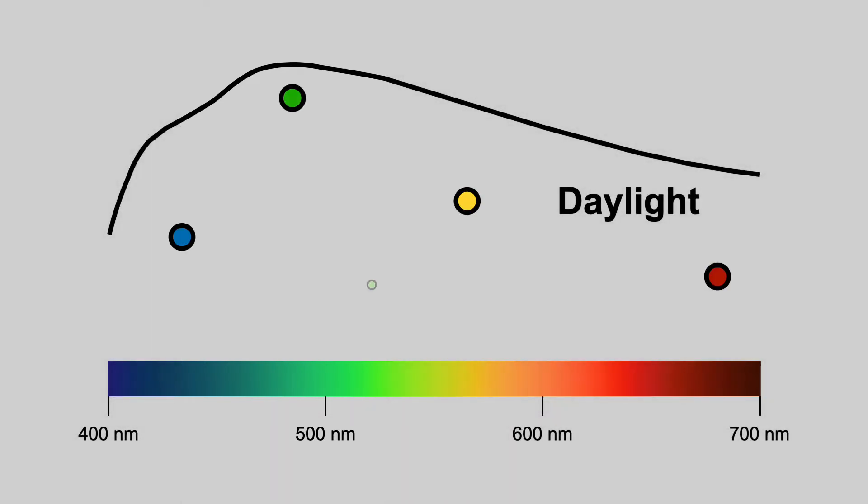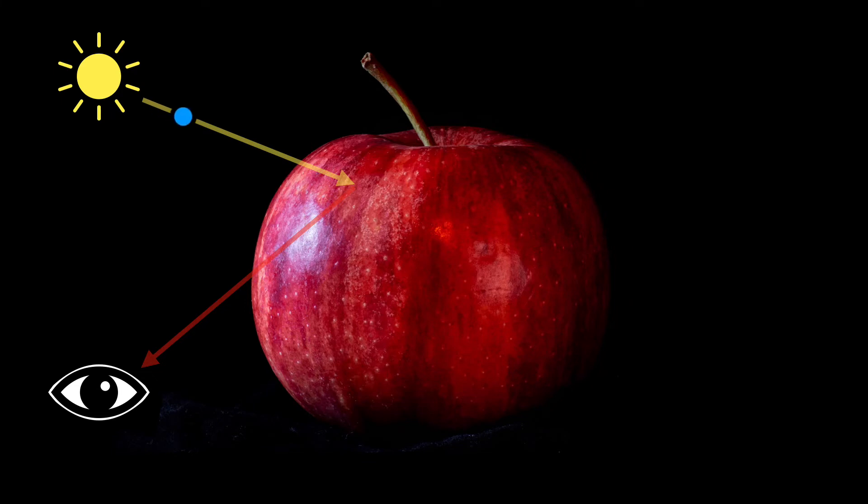Now light is made out of lots of photons. You can think of each photon as a little energy particle with a particular wavelength. For example, this green one is around 500 nanometers. When these photons hit the apple, most of them get absorbed. Only the red photons are reflected, and that's why the apple looks red to us.